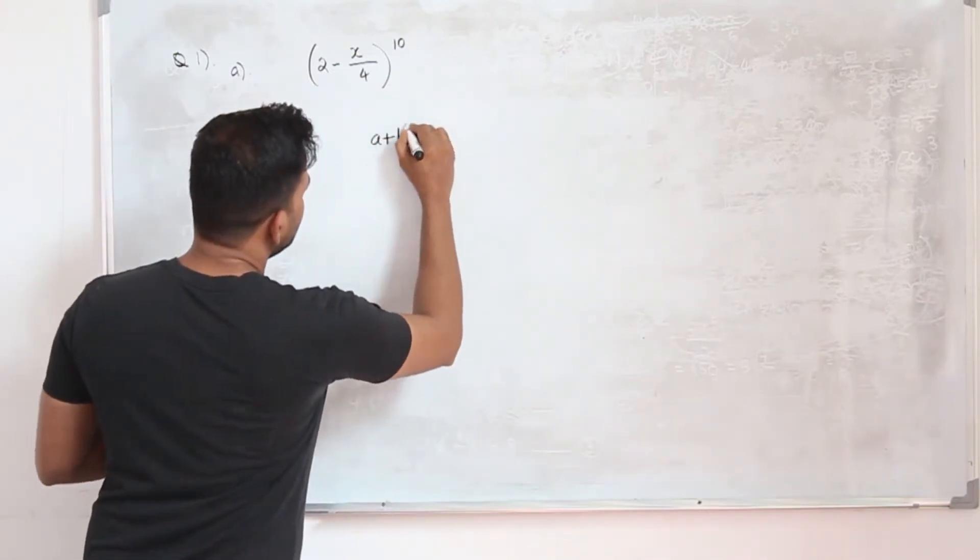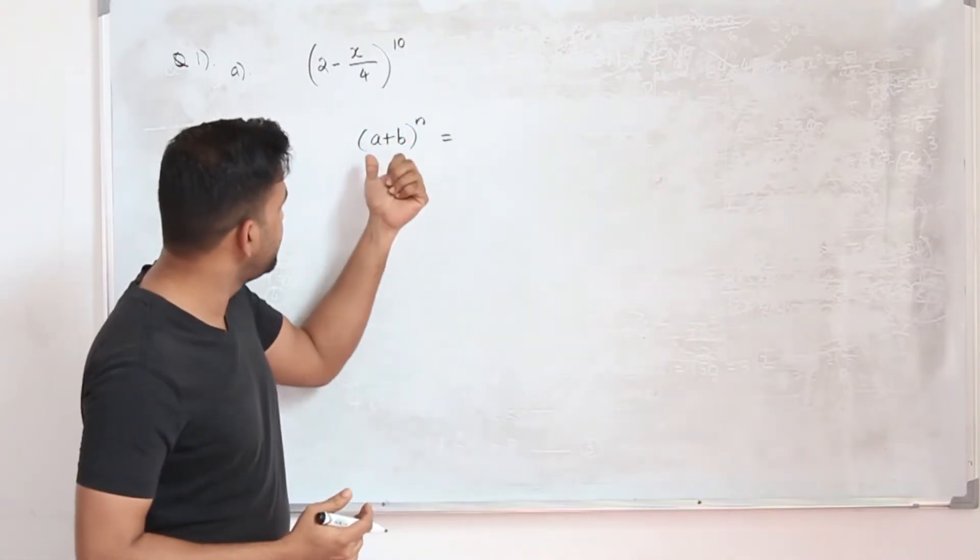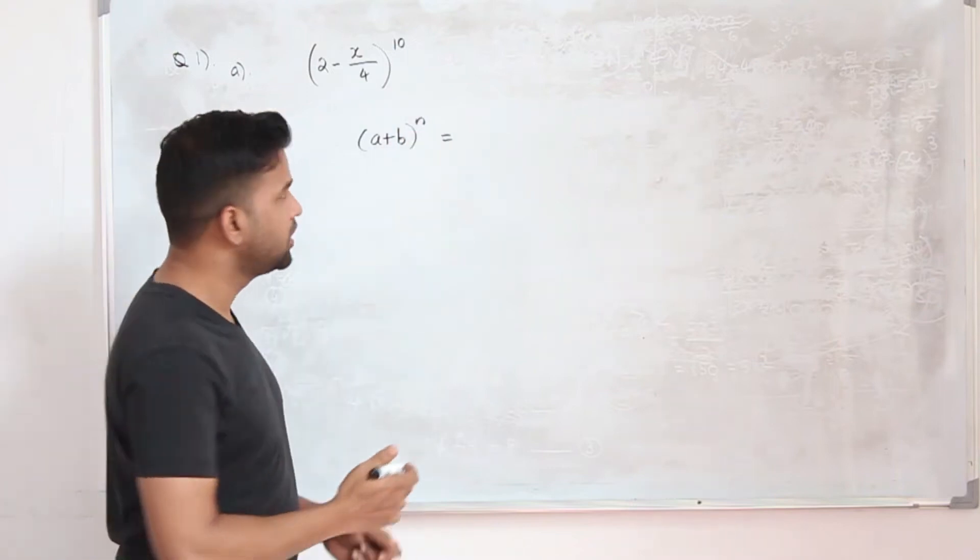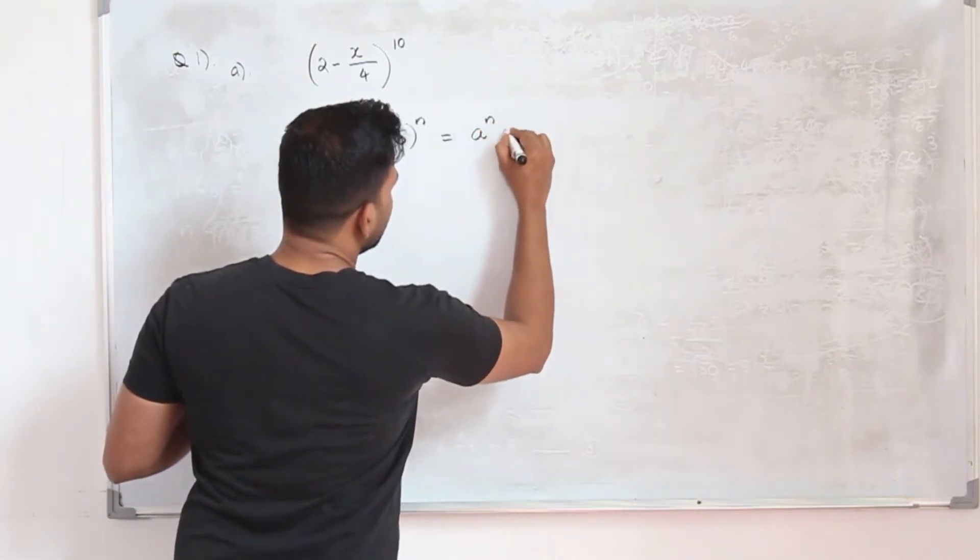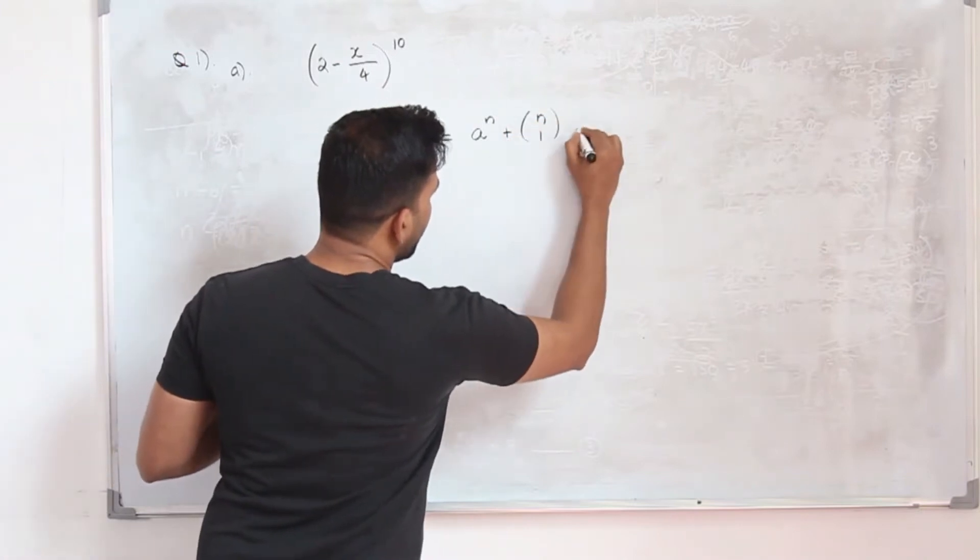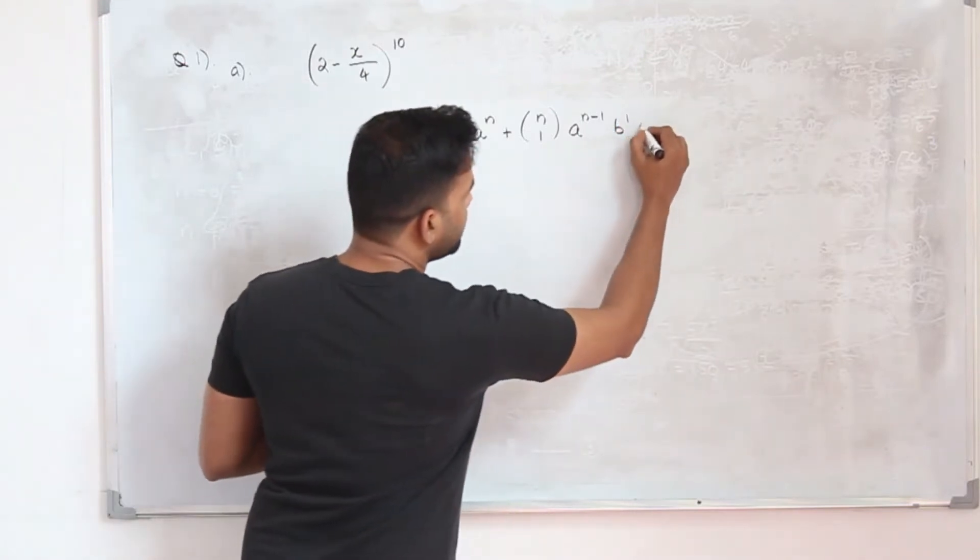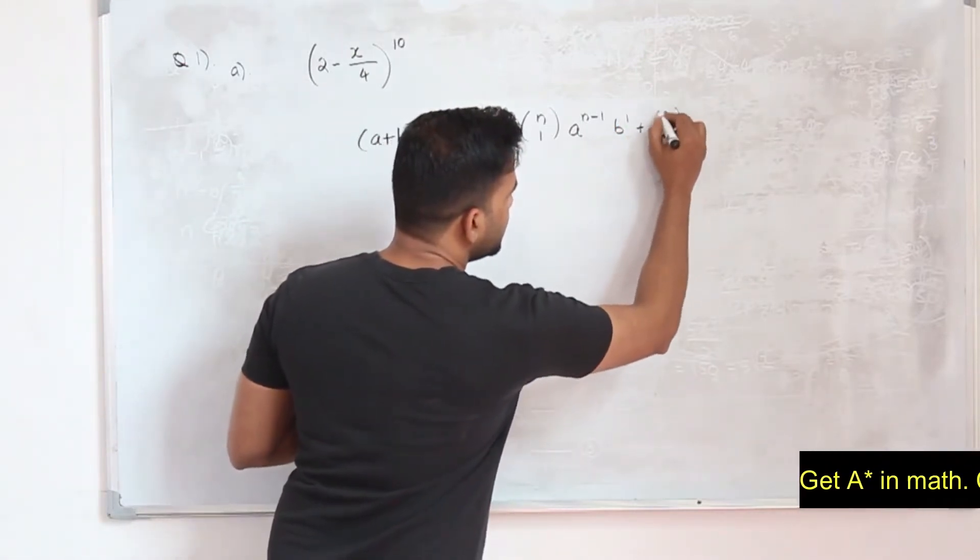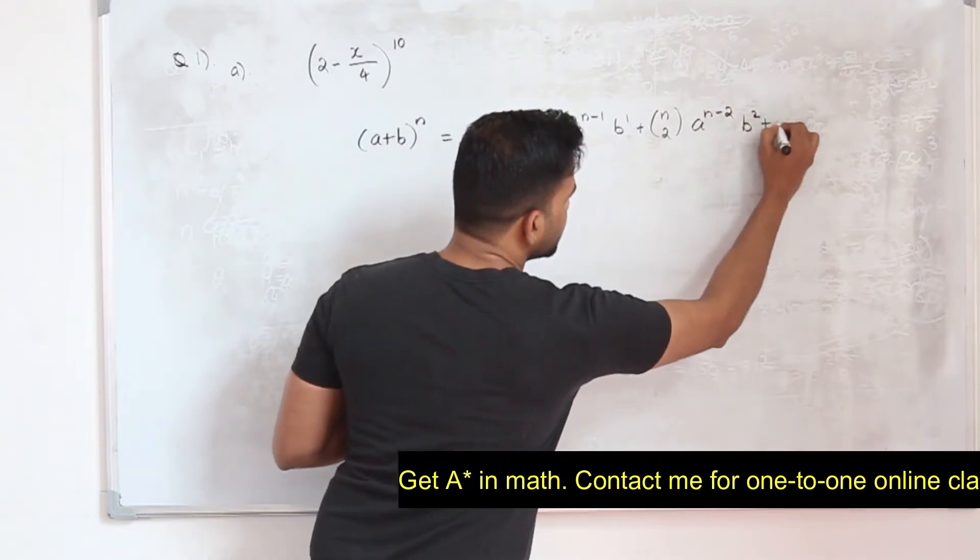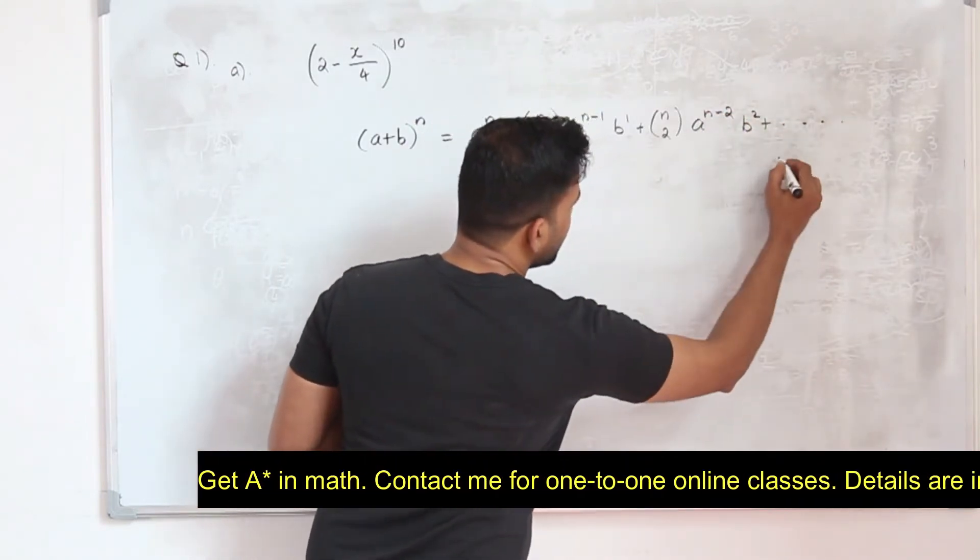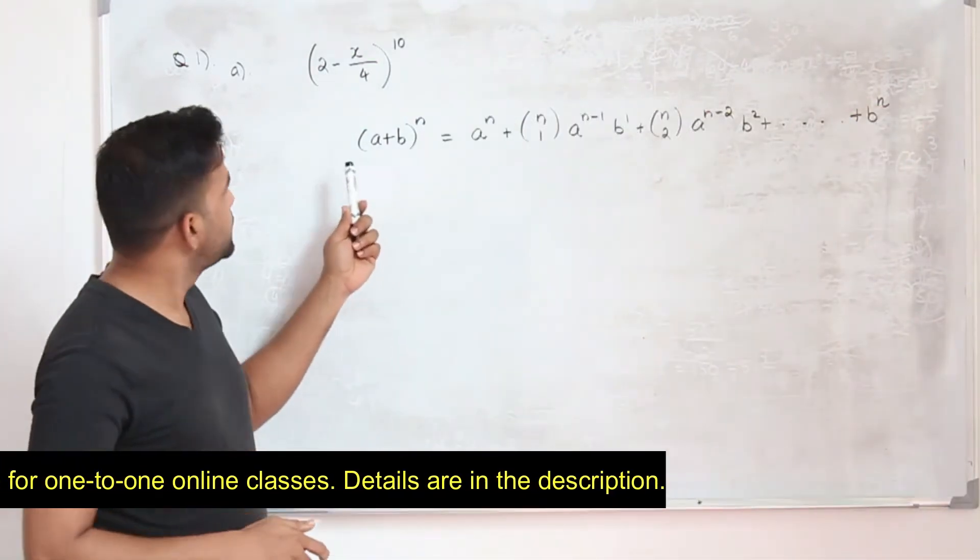If you have (a + b)^n, it can be written as a^n plus nC1 a^(n-1) b^1 plus nC2 a^(n-2) b^2 plus etc. Your last term will be just b^n. This is the binomial expansion.